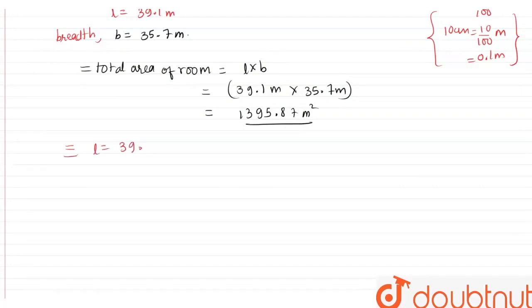So for the square tile, the length of the room is given 39.1 and breadth is 35.7, right? So for that we need to find the highest common factor, which gets squared and uses the tile. So for finding HCF, that is highest common factor of 39.1 and 35.7, we factorize them.